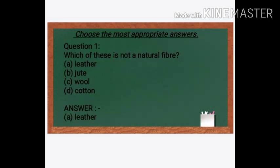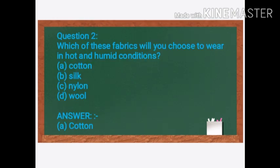Let's start with the first MCQ question: Which of these is NOT a natural fiber? Options: A. Leather, B. Jute, C. Wool, D. Cotton. Your answer is A. Leather. Leather is not a natural fiber. Jute, Wool, and Cotton are all natural fibers.